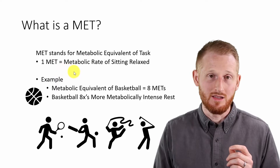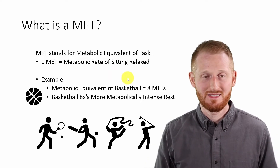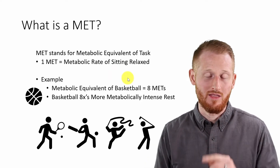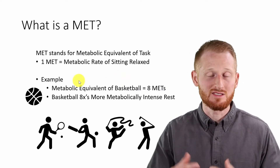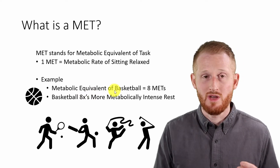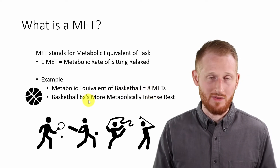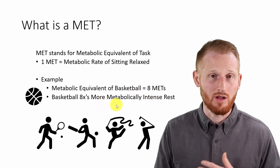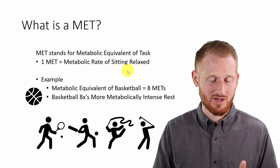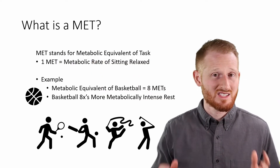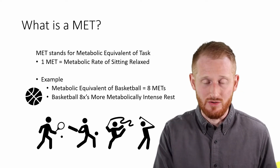One MET is equal to the metabolic rate of you sitting relaxed — sitting there doing nothing, that's one MET. An example of how this applies to activity: I looked up the metabolic equivalents for basketball. Playing a basketball game is around eight METs, which means that basketball is eight times more metabolically challenging on your body than rest. So if it's eight METs, that means it's eight times harder than sitting relaxed. That's a simple definition of what a MET is.